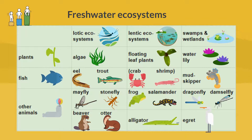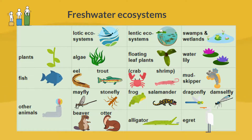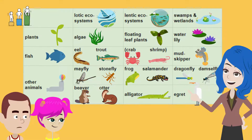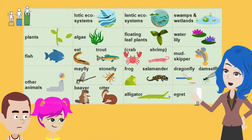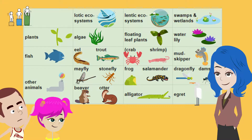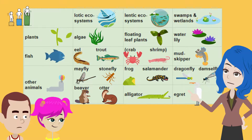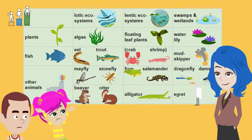Freshwater Ecosystems review. What mammals live in lotic ecosystems? Beavers and otters. What amphibians live in lentic ecosystems? Frogs and salamanders. What insects live in the wetland? Dragonflies and damselflies.